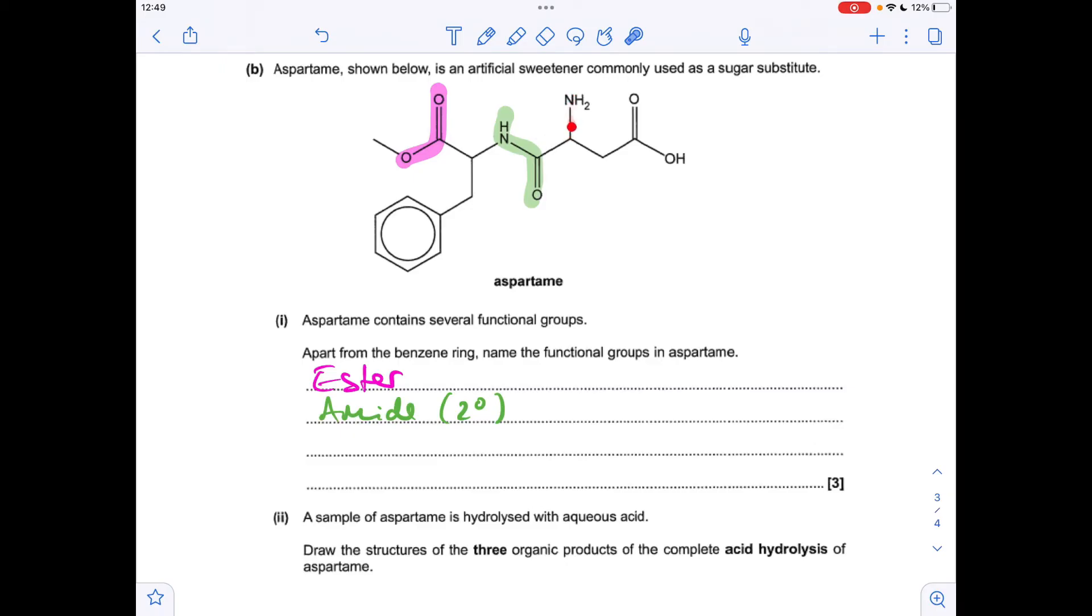The next group is this one here. We've got an amine. That's a primary amine, but again we just had to say amine. And there's one more functional group. This one here is obviously a carboxylic acid.